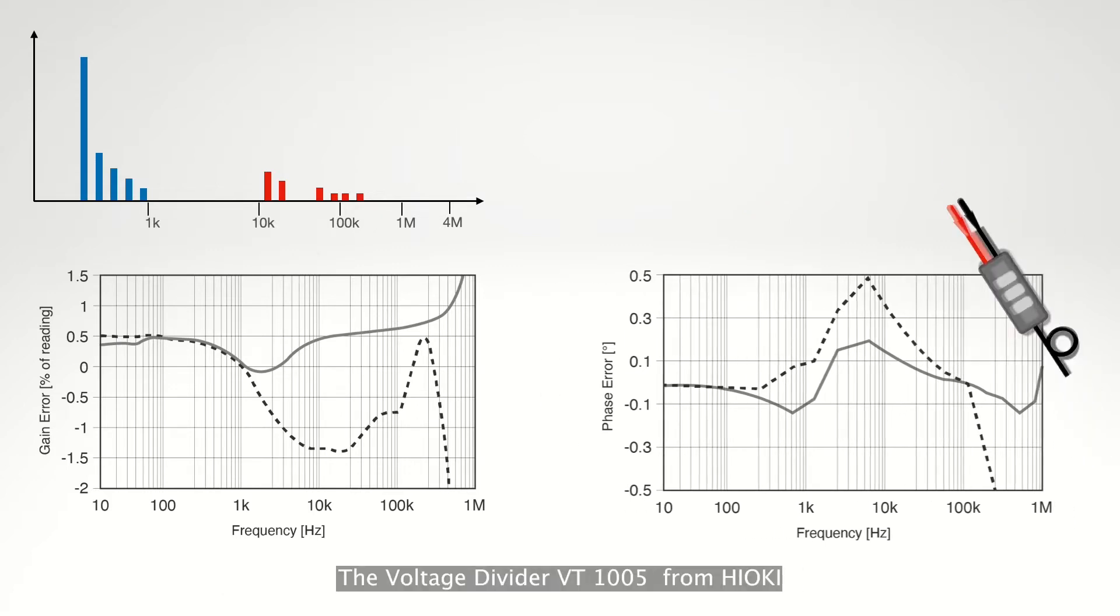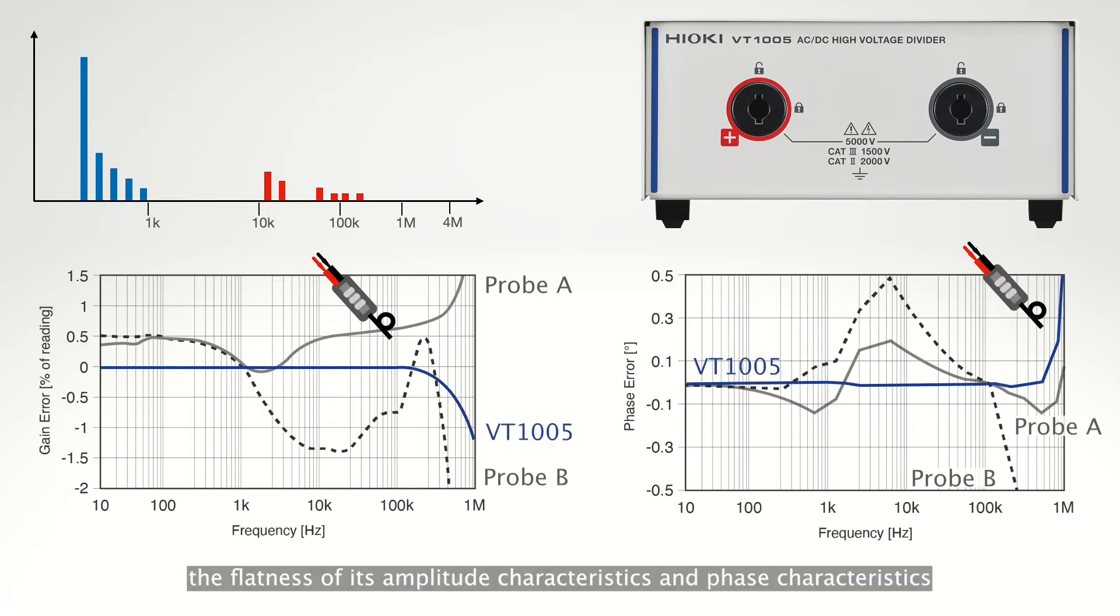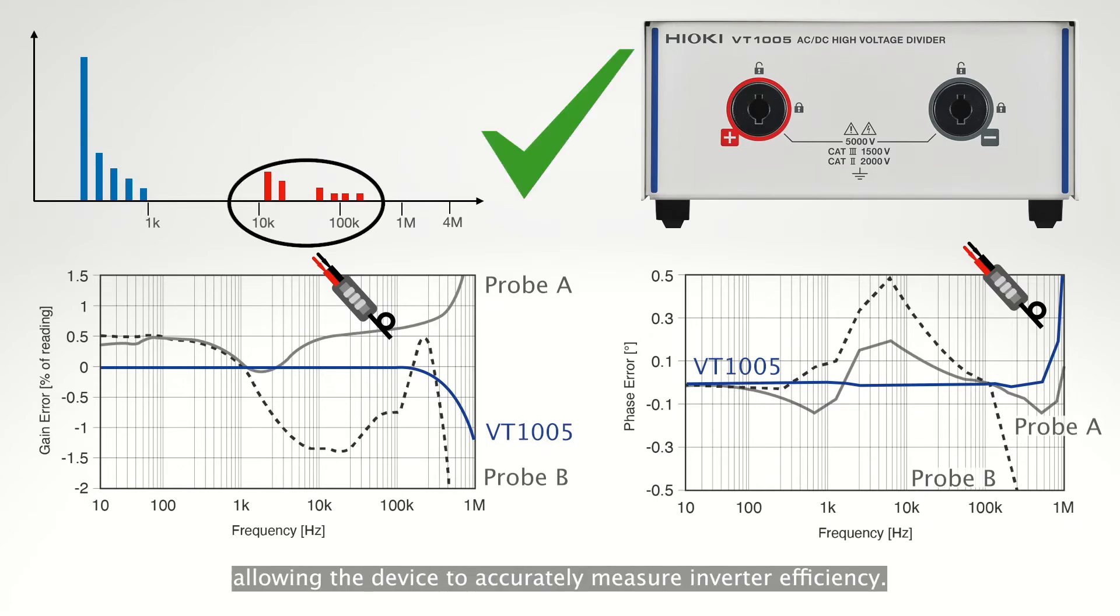The voltage divider VT1005 from Hioki has a flat frequency characteristic. The flatness of its amplitude characteristics and phase characteristics is excellent throughout the high frequency band, allowing the device to accurately measure inverter efficiency.